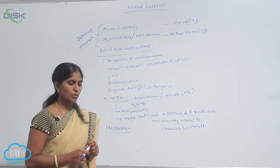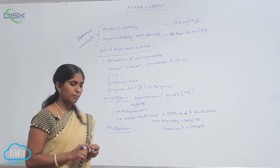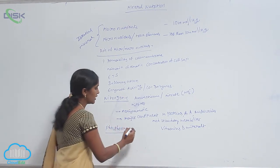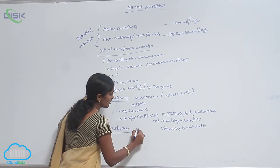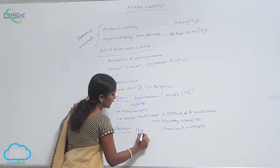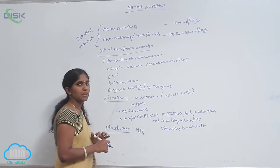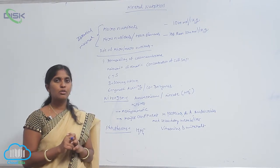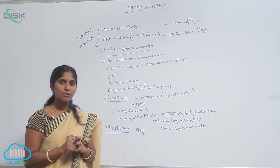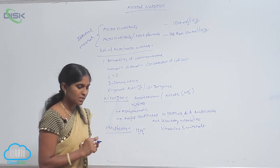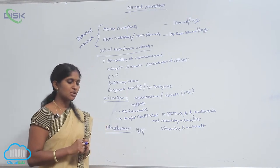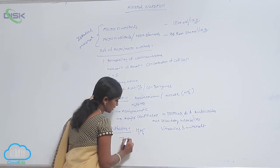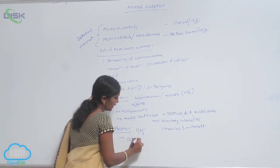Phosphorus is also important. It is absorbed by the plants in the form of H₃PO₄⁻ phosphate ions. The plant absorbs the phosphorus in the form of phosphate ions. The phosphorus is a constituent of the cell membrane.